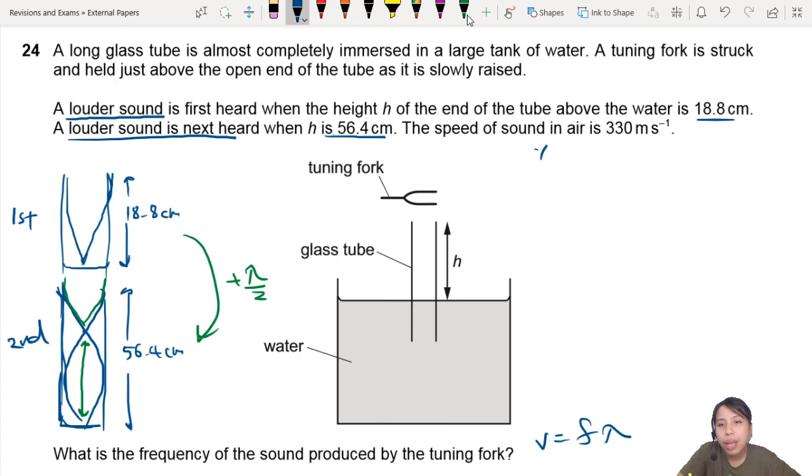So the lambda over 2 that you just added will be the difference between the length of two pipes or two air columns. So that will be 56.4. Actually, let me call this delta H. So lambda over 2 will be 56.4 minus 18.8, cm.